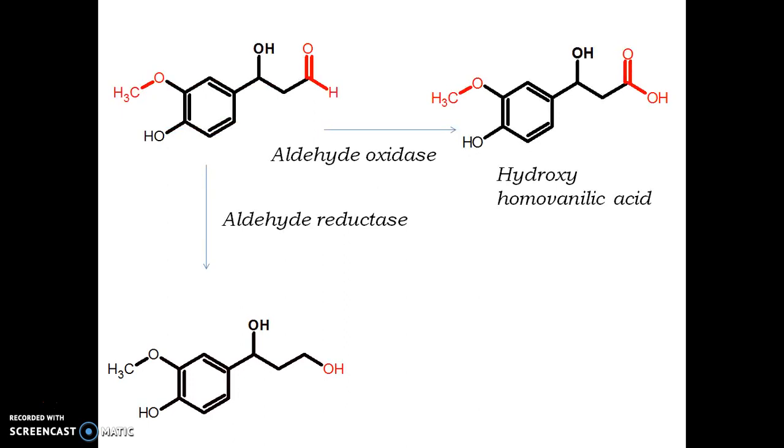Further, these structures are metabolized by other enzymes. They are aldehyde oxidase, which converts this aldehyde molecule into an acid molecule—the derivative is called hydroxy homovanillic acid. The same thing is reduced by aldehyde reductase enzyme, which converts it into an alcohol.